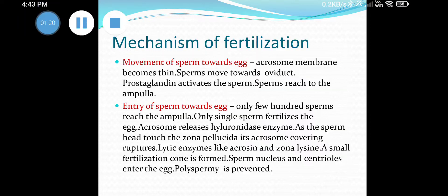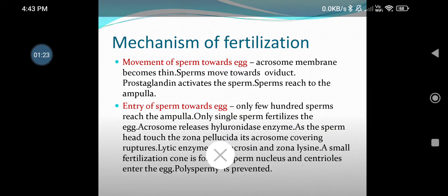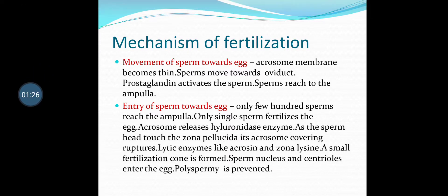Mechanism of fertilization: movement of sperm towards egg. The acrosome is present in the head of the sperm, and it contains an enzyme called hyaluronidase. The acrosome membrane becomes thin. Sperms move towards the oviduct, that is towards the fallopian tube. Prostaglandin, which is the secretion of the prostate gland, activates the sperm. Sperms reach the ampulla, which is a part of the fallopian tube.